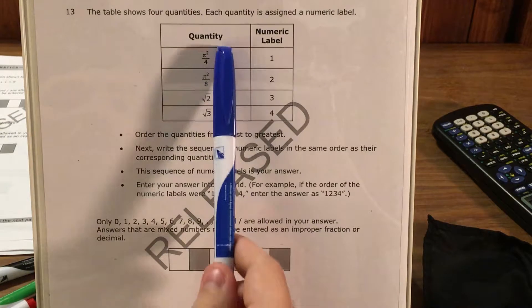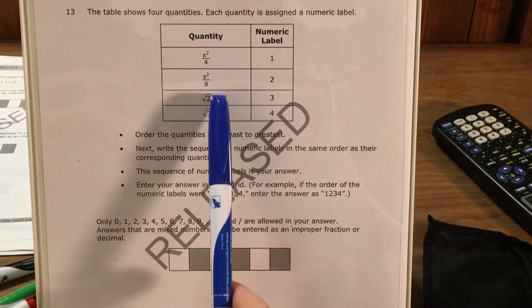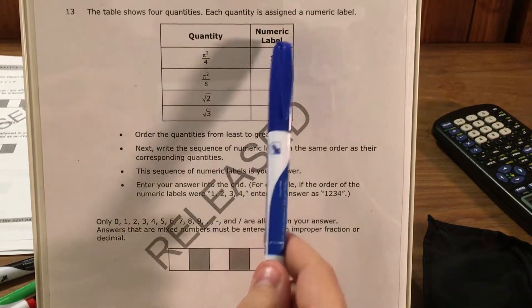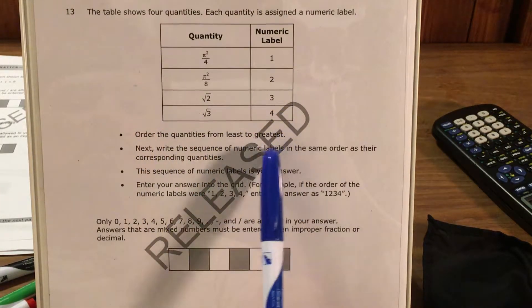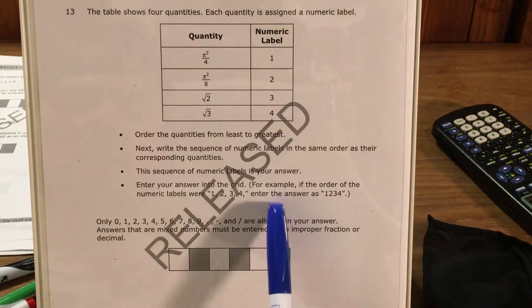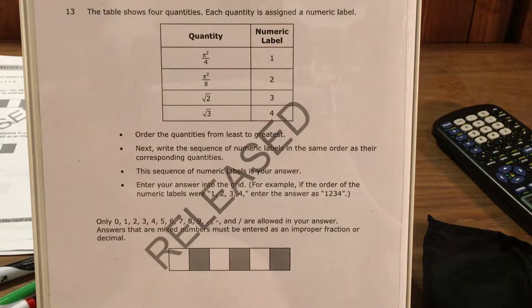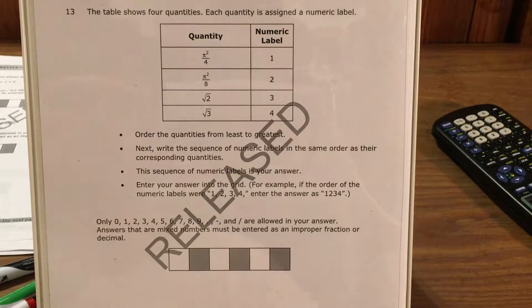We can see that we have this table of some quantities that we're not quite sure what they are yet, but each of them has a numeric label and we're supposed to order them from least to greatest and then do some other stuff so we can get an answer.